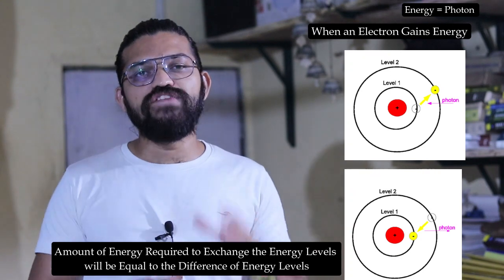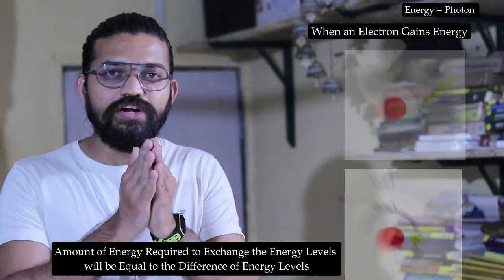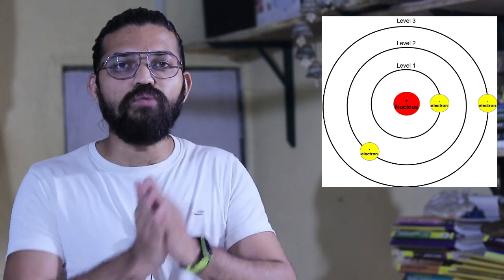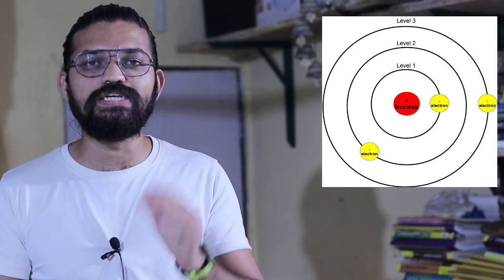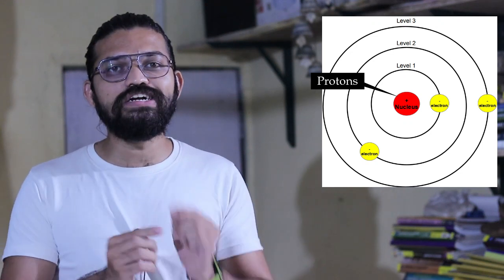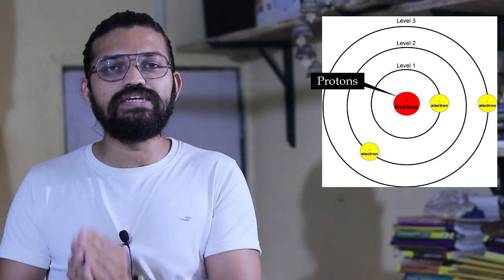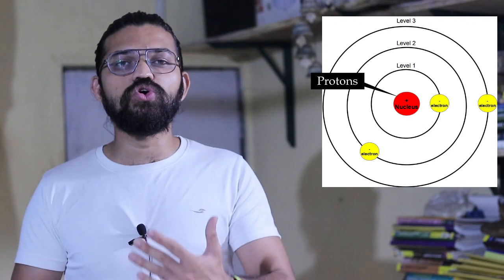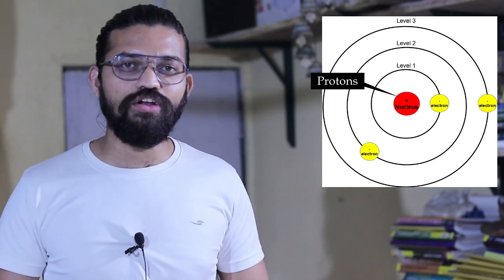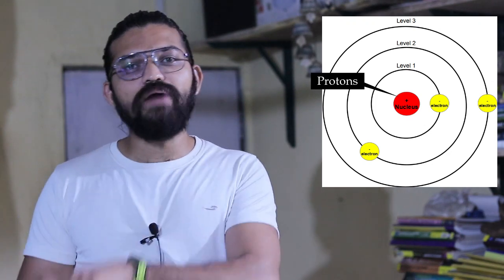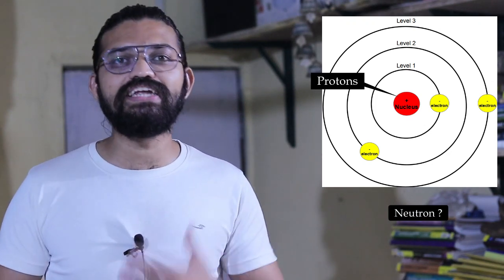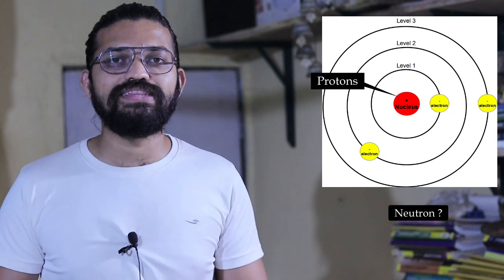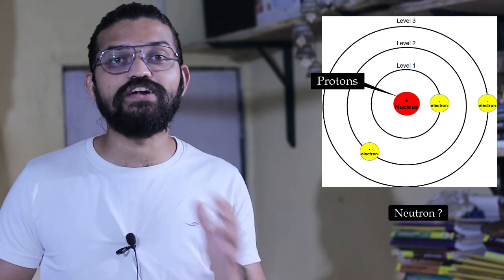We now have a redefined model. In an atom, at the center we have the nucleus consisting of positively charged subatomic particles — the protons — and electrons revolve in discrete fixed energy levels around the nucleus. We are now much closer to the standard model of an atom. One particle remains — the neutron, an electrically neutral particle discovered by Sir James Chadwick — and we will cover that in the next video.